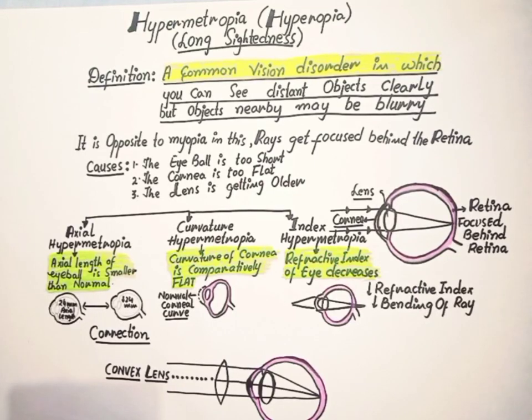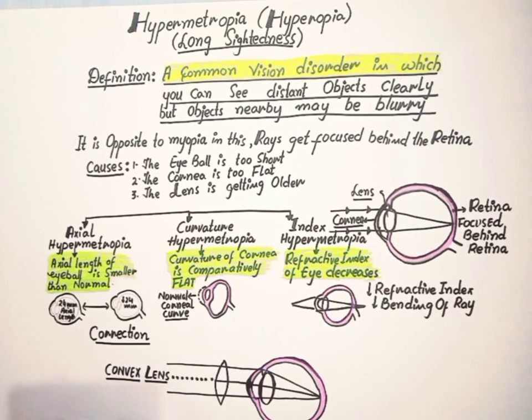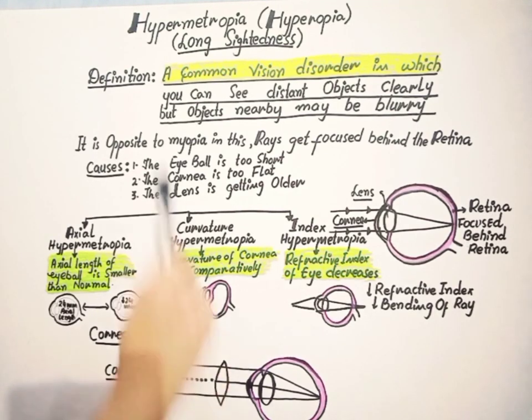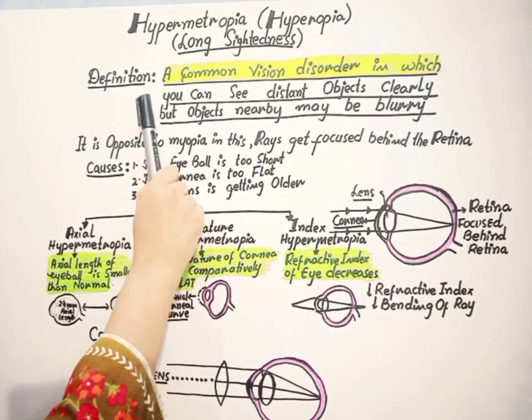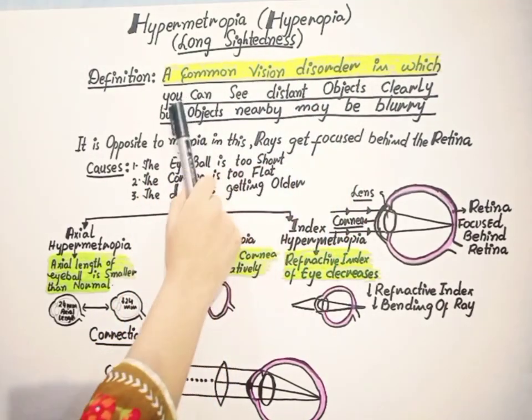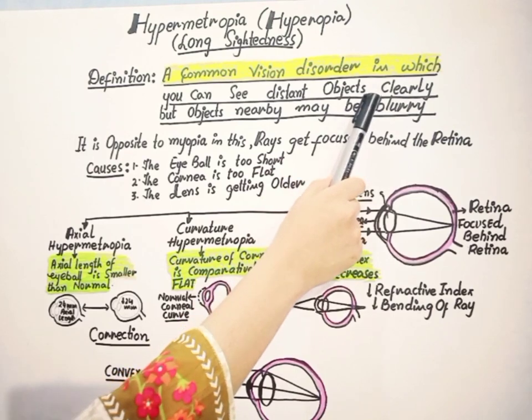Hello everyone, welcome back. Let's continue with another eye disorder: hypermetropia, which is also called hyperopia, long-sightedness, or farsightedness. Here is the definition of this hypermetropia. It is a common vision disorder in which you can see distant objects clearly.